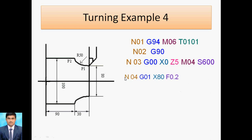Block N05 is circular interpolation in the clockwise direction, so G02. The endpoint diameter is X100. We write G02 because the arc is clockwise. X is 100 (final diameter), Z is minus 30 (negative direction), and R50 is the radius. The tool follows this arc path.